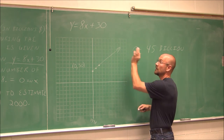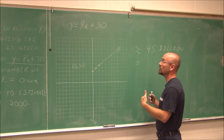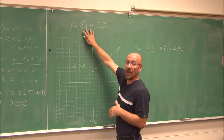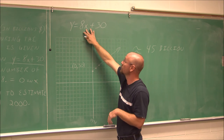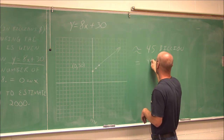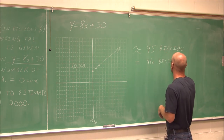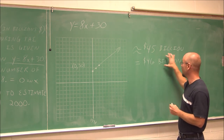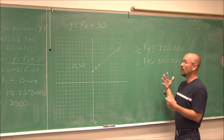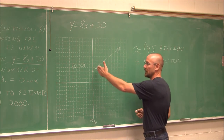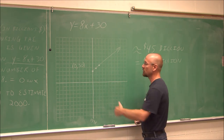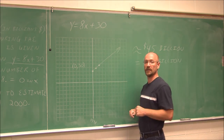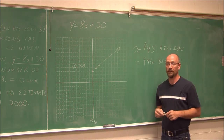If we plug it into the equation exactly: two years after 1998 is the year 2000, x equals 2, so 2 times 8 plus 30 equals 46 billion dollars. Those units are very important — not just the number, but the unit as well. So 1998 is our reference point, and every year after that we can use the graph to estimate or the equation to find exact values. This has been section 6.2. Thank you for watching.